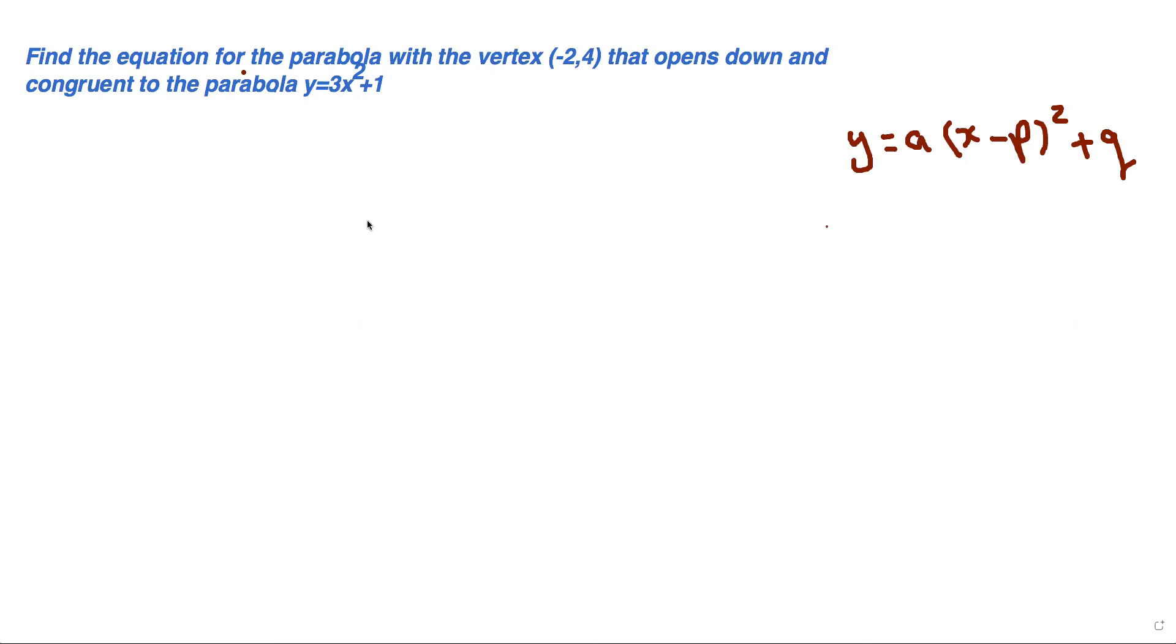This is very easy. Congruent means they have the same a-value because congruent means the same size. The a for y = 3x² + 1 is 3, so the a for this one should be also 3.